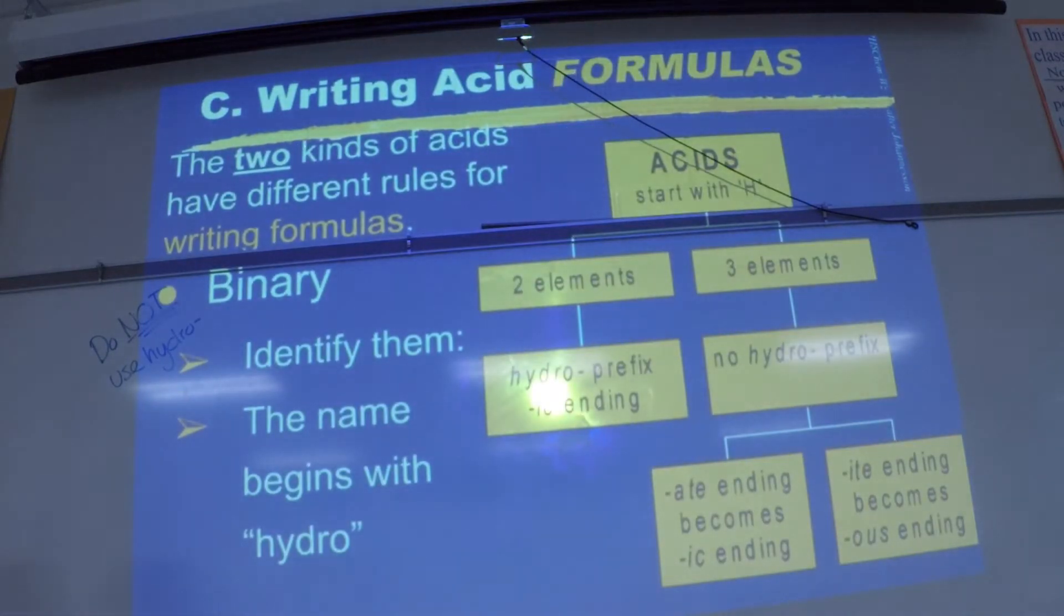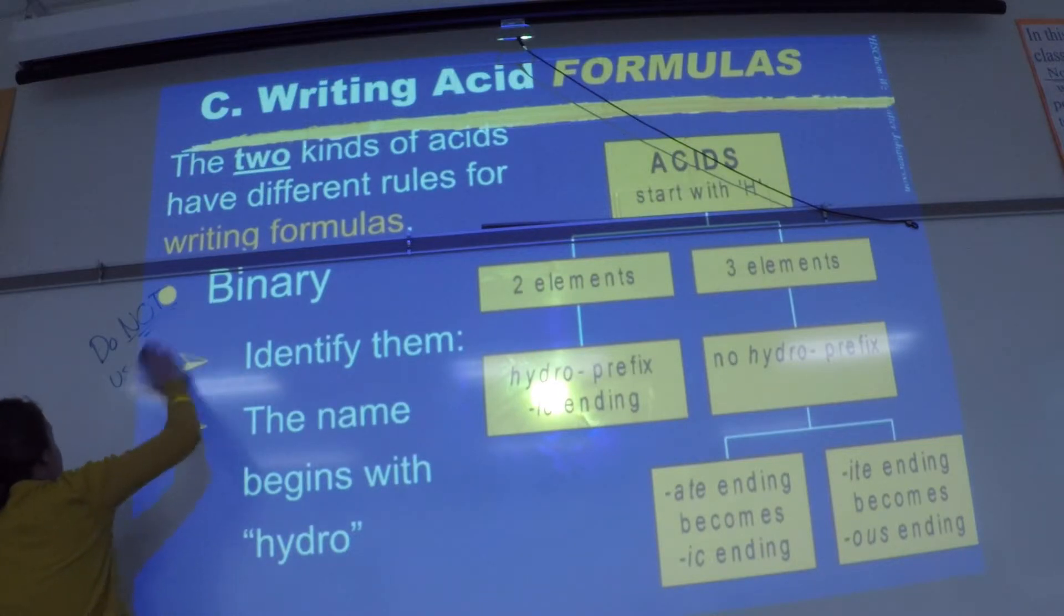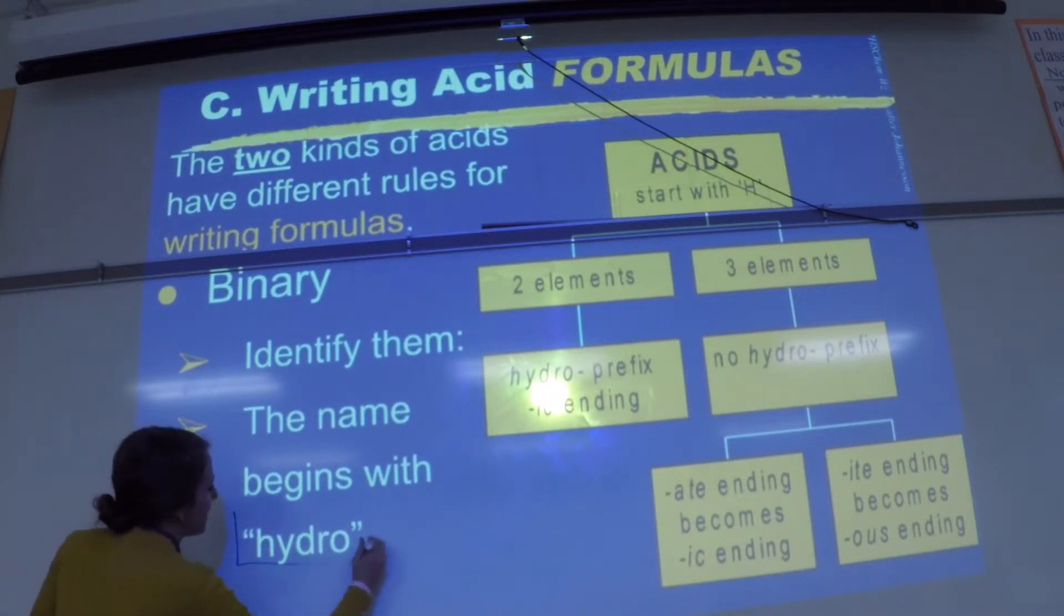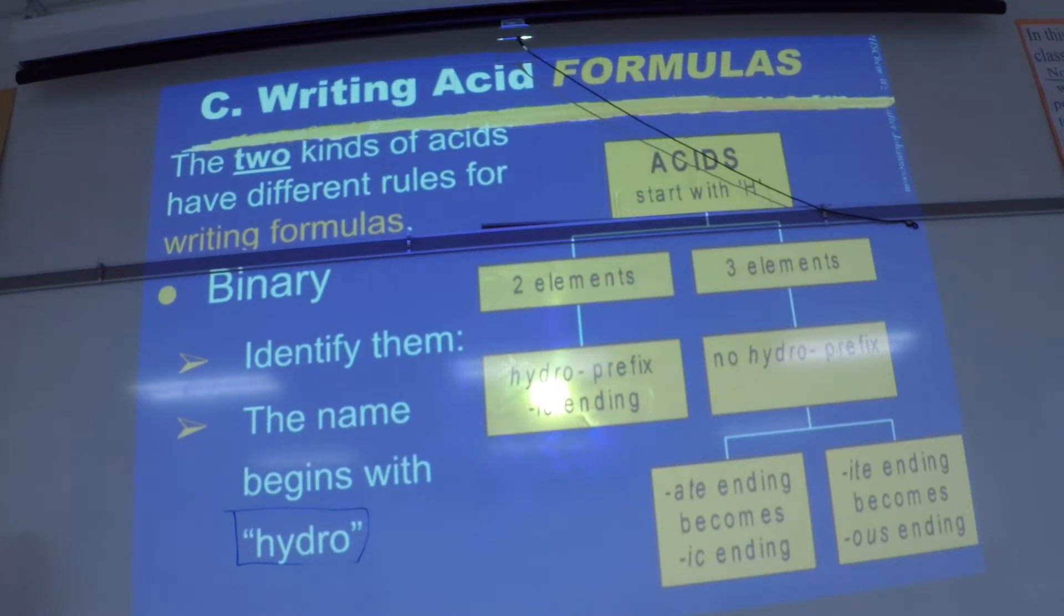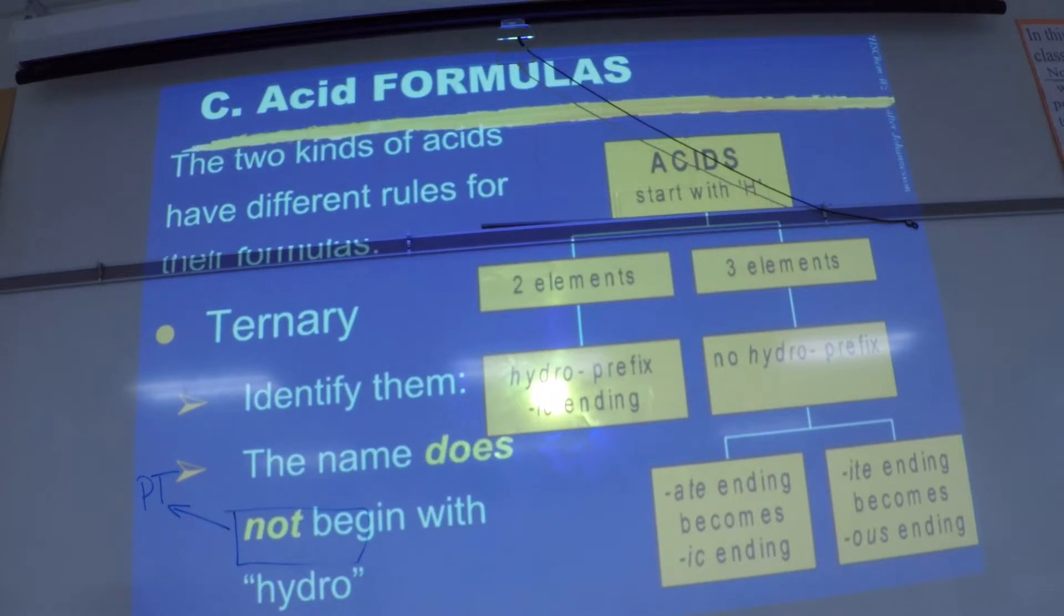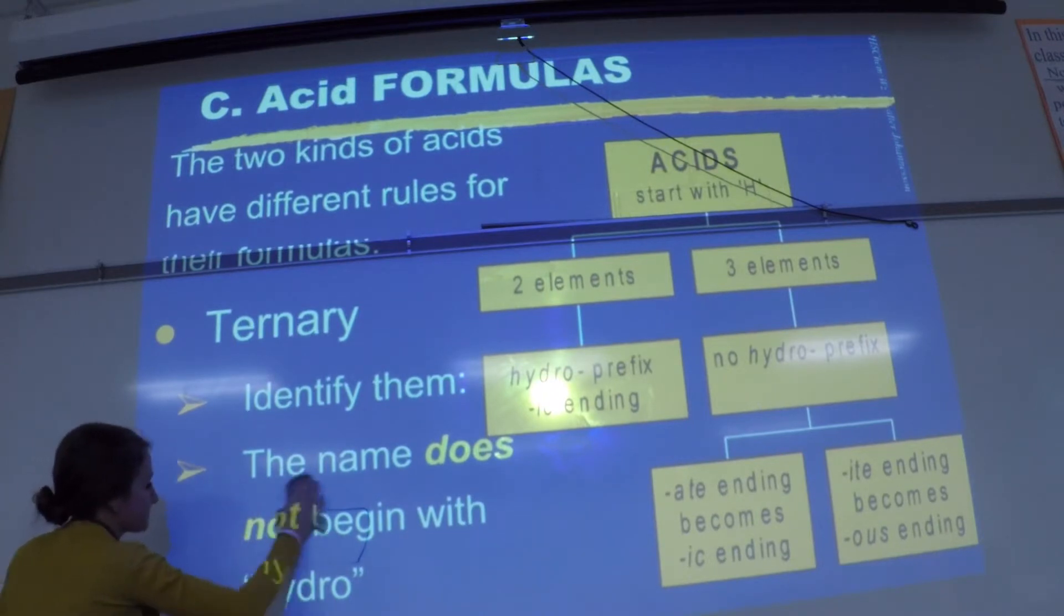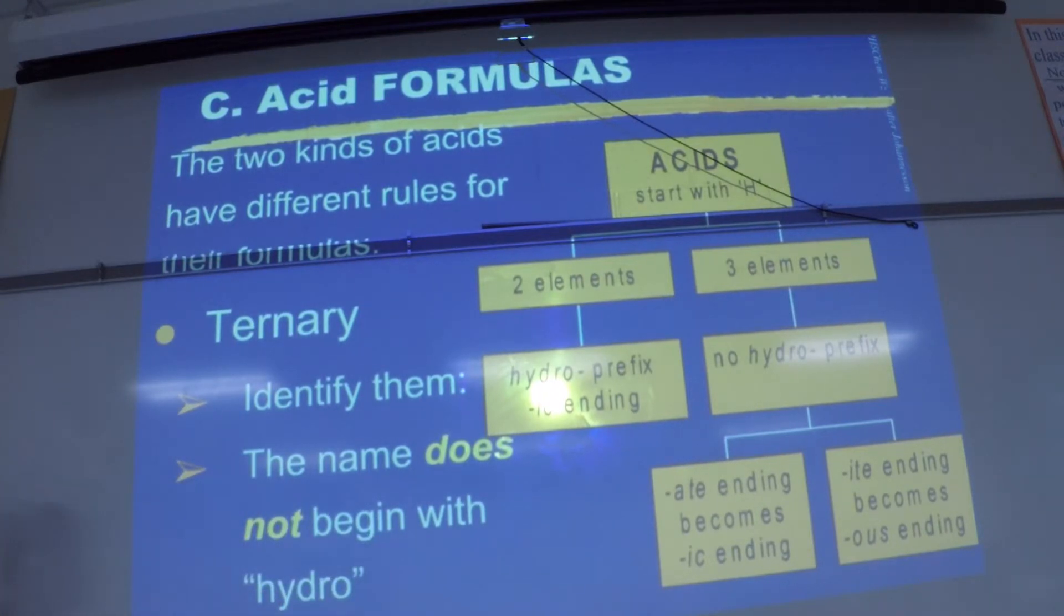All right let's do it in reverse now. Okay, so now if I give you a name and you need to write its formula, the hydro again is going to be very helpful to you. If it has hydro in its name, where should you look to try to find it? Good, if hydro is in its name, look at the periodic table because it's just an element. If it does not have hydro in its name, then look at your polyatomic chart. Right, so that will distinguish where you need to look.